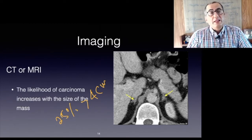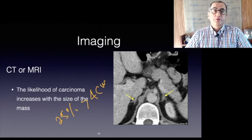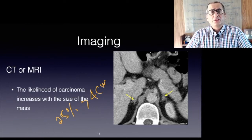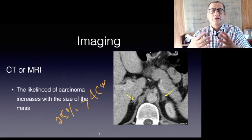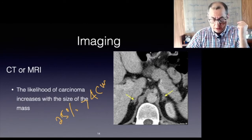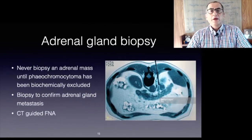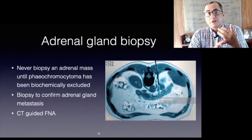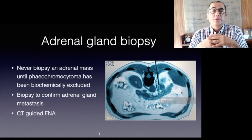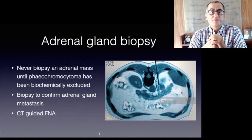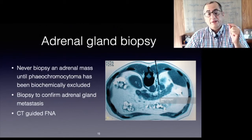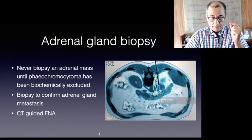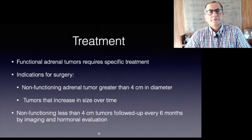Adrenal metastases are likely in a patient with a history of cancer elsewhere, and the sole indication for biopsy of an adrenal mass is to confirm a suspected metastasis from a distant primary site. A word of caution: always exclude a pheochromocytoma first before biopsying adrenal masses, as release of catecholamines by the intervention may trigger a severe hypertensive crisis.